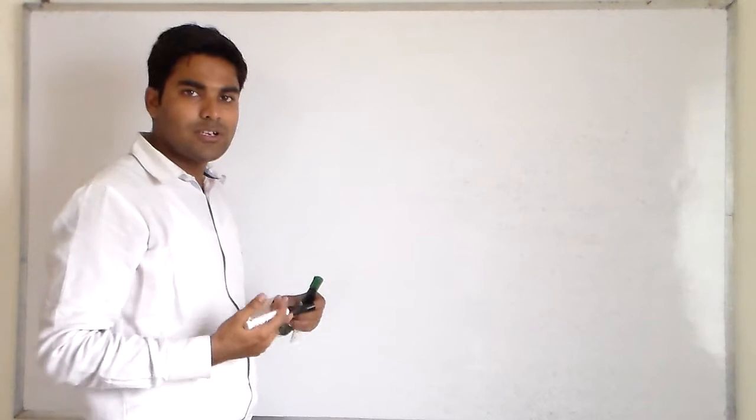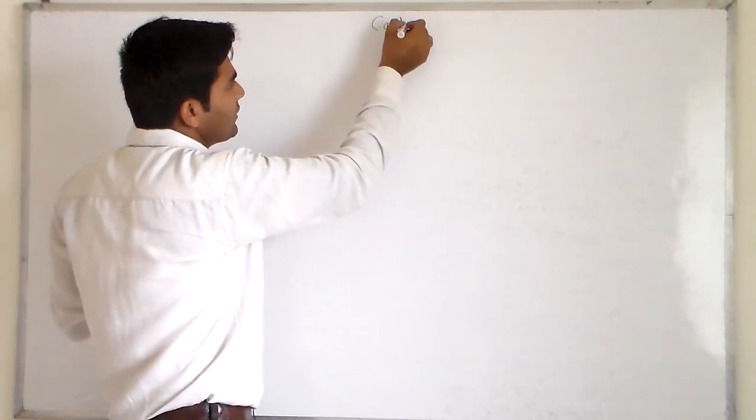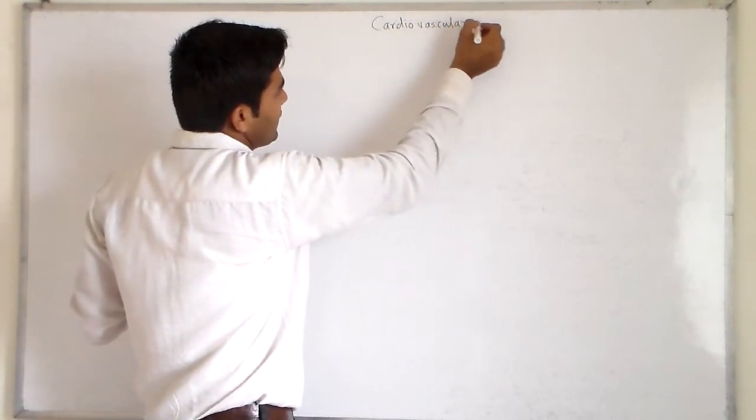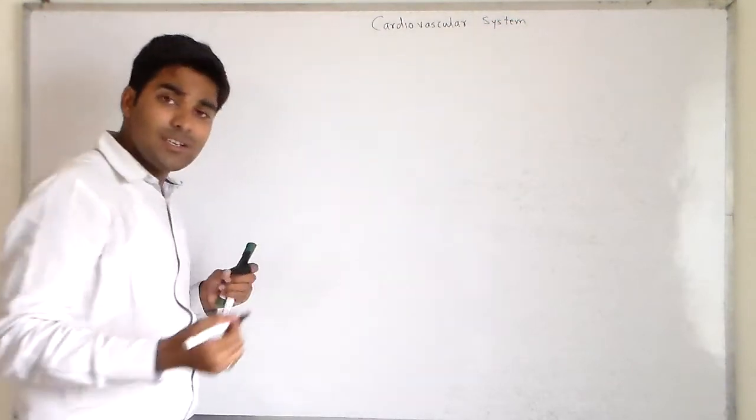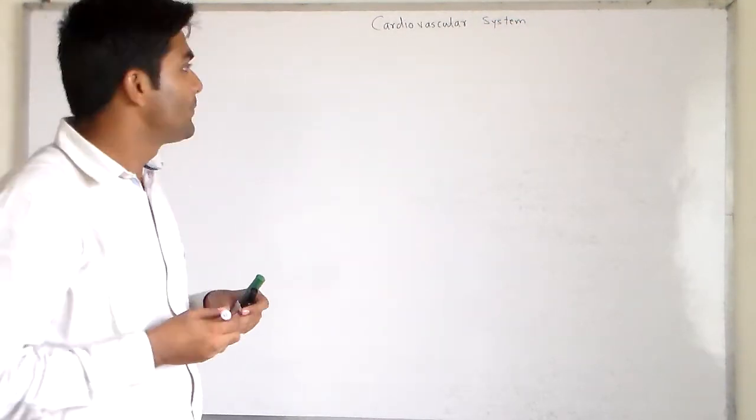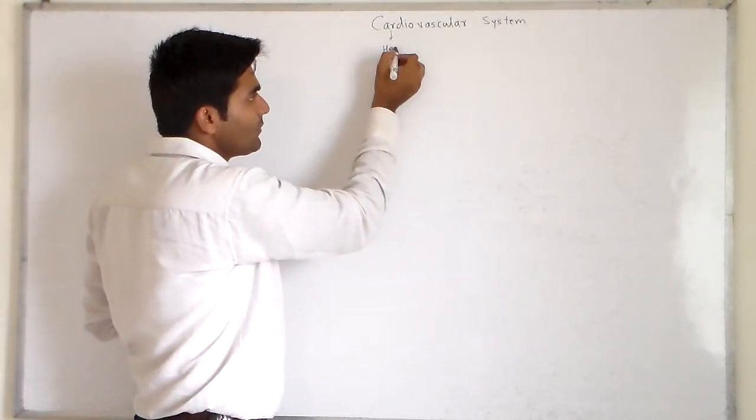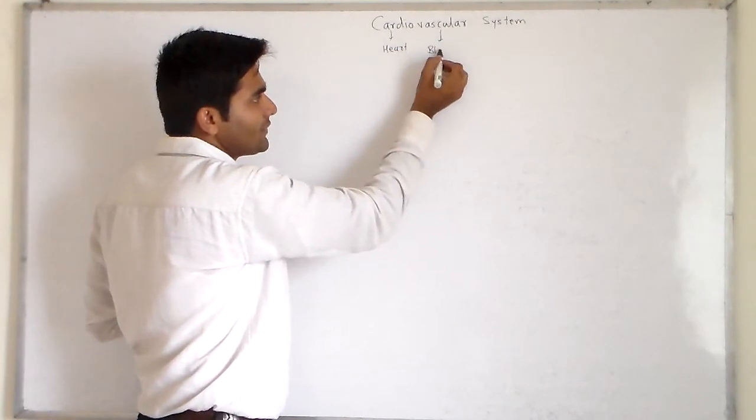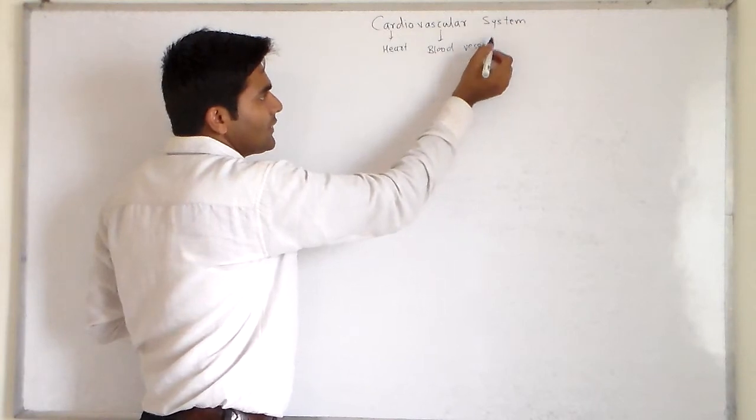So first of all, heart comes under cardiovascular system. What is cardiovascular system? Cardio means heart. Vascular means blood vessels. System.